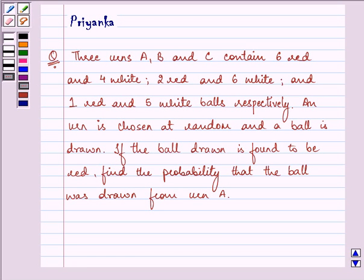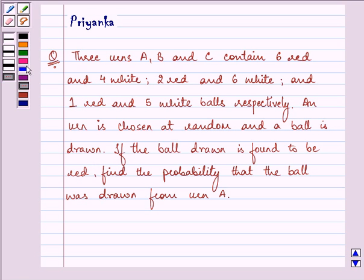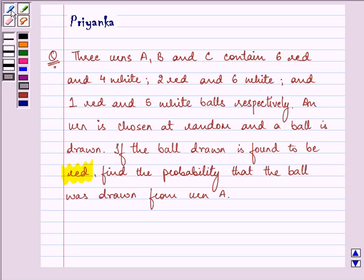Hi and how are you all today? The question says three urns A, B and C contain six red and white, two red and white, and one red and white balls respectively. An urn is chosen at random and a ball is drawn. If the ball drawn is found to be red, find the probability that the ball was drawn from urn A.